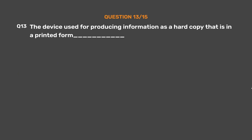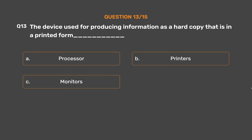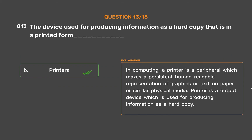Question No. 13. The device used for producing information as a hard copy, that is in a printed form, is blank. Option A: Processor. Option B: Printers. Option C: Monitors. Option D: Keyboard. The correct answer is Option B — Printers. In computing, a printer is a peripheral which makes a persistent human-readable representation of graphics or text on paper or similar physical media. A printer is an output device used for producing information as a hard copy.